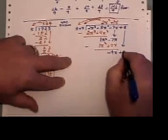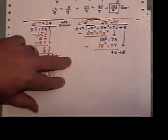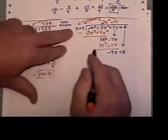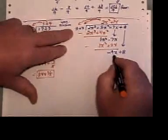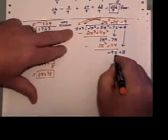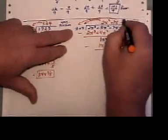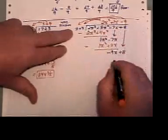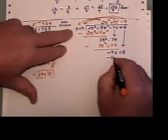Bring down the next term, which is plus 8, and carry on. x has to be multiplied by negative 9 to get to negative 9x. Now I do negative 9 times both of those guys. And it gives me negative 9x.